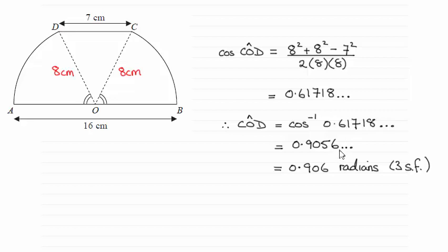Don't forget, though, you must have your calculator in radians mode, an easy mistake to make. But that should turn out to be 0.9056 and so on. And so to three significant figures, that's 0.906 radians.